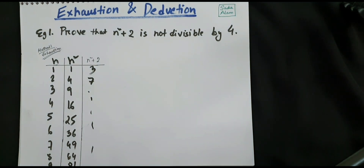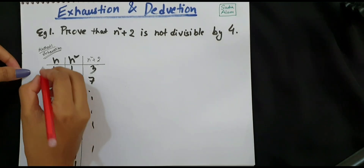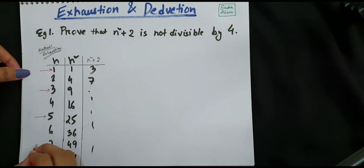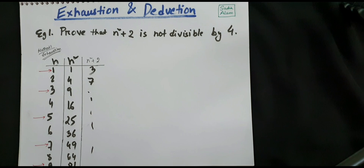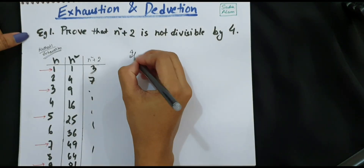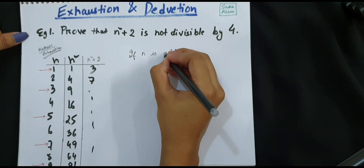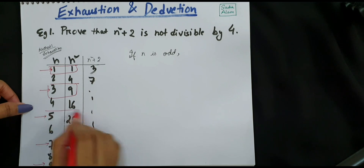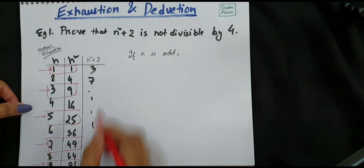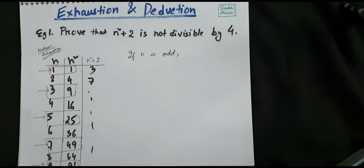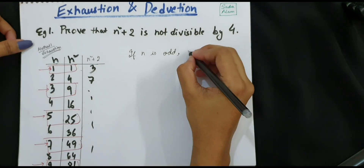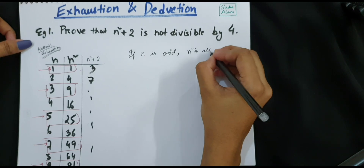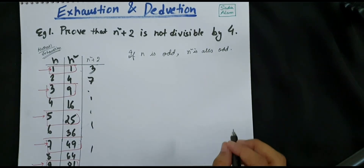In the case of exhaustion, it is always easier if we analyze the pattern for odd and even separately. Suppose we are taking only odd values. If n is odd, as you can see from the table, n squared is also odd — 1, 9, 25, 49, 81. So when n is odd we can say n squared is also odd.